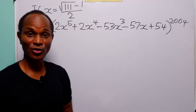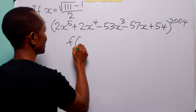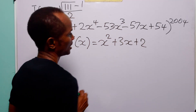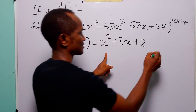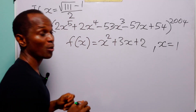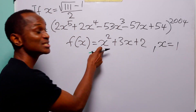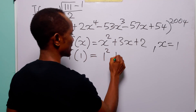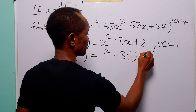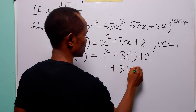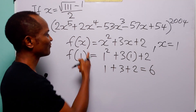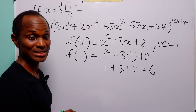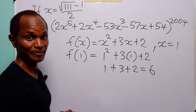Hello and welcome. Usually when we have a function of x — for instance f(x) = x² + 3x + 2 — and we are required to find the value at x = 1, what we do is plug 1 into the function wherever we have x. So f(1) = 1² + 3(1) + 2 = 1 + 3 + 2 = 6. So the value of this function at x = 1 is 6. Now there is a second way of doing this, and that is by using the Remainder Theorem.